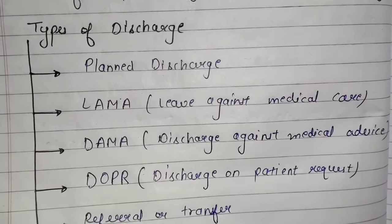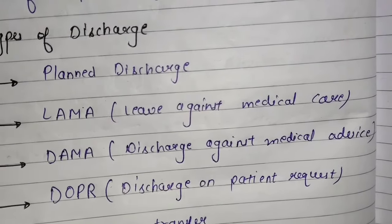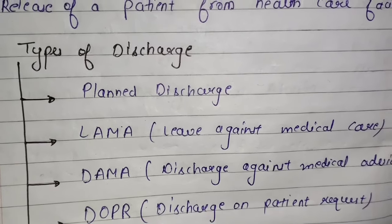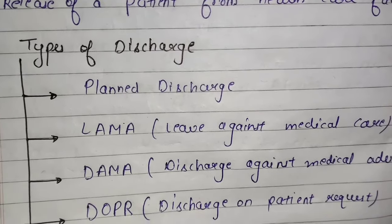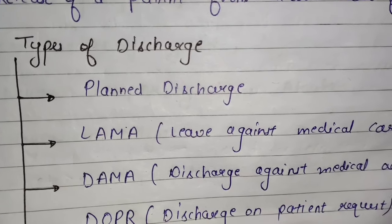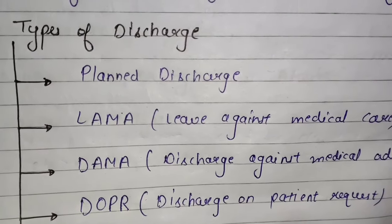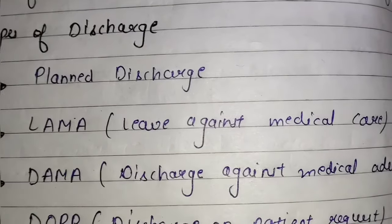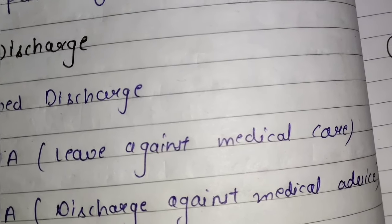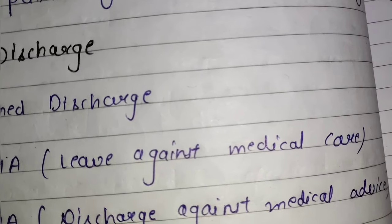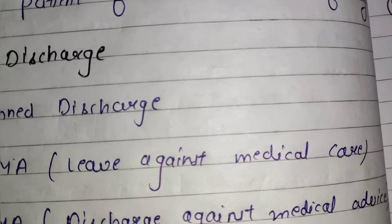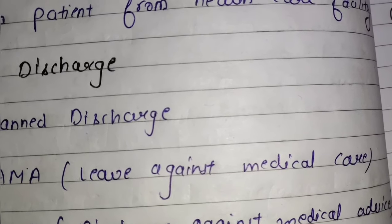Next, types of discharge. First one is planned discharge — ismein jab patient ka treatment complete ho jata hai, to doctor usko discharge provide kar deta hai; yeh pahle se hi planned karke rakhta hai doctor ki patient ko kab discharge provide karna hai. Second is LAMA — leave against medical advice — LAMA mein jab patient continue nahi karna chahta apna treatment, to wo chhod deta hai hospital ko against doctor's medical advice. Doctor risks aur complications explain kar deta hai patient ko aur unke family members ko.